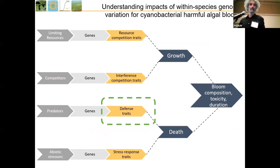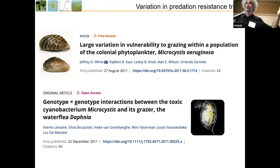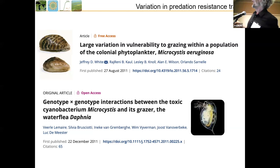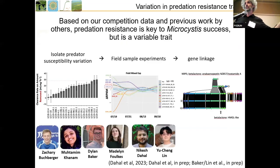Now we go to defense traits, because Microcystis sucks at competing for resources but defense is already known from the literature to be important. Our general thesis is that the reason Microcystis is so successful is all this diversity — so we're zooming in on what the diversity in these defense traits looks like. There's a lot of variability in resource competition traits within the Lake Erie collection of strains, and similarly we looked at variability in resistance to mussels and to Daphnia as a model zooplankton species.